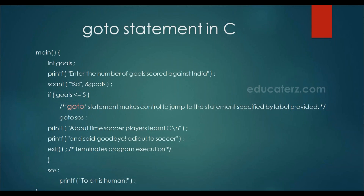Next we have the goto statement. Goto is used to jump to a particular statement labeled in the program. On a particular condition we want to skip a few statements and directly jump to some label, then we can use goto. In this example we read some number; if the value is less than or equal to 5, then we directly jump to that label by skipping those three statements.